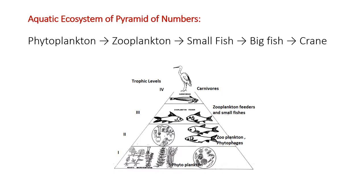In an aquatic ecosystem, the phytoplankton present in water are more in number compared to the apex predators — big fishes, cranes, or tertiary predators. At the second level are zooplankton, which depend upon phytoplankton, and phytophagous organisms. Fishes in the third trophic level depend upon zooplankton, and small fishes are eaten by big fishes. This is how the number of organisms in the aquatic system goes on decreasing from phytoplankton upward.